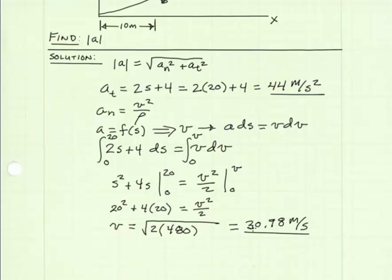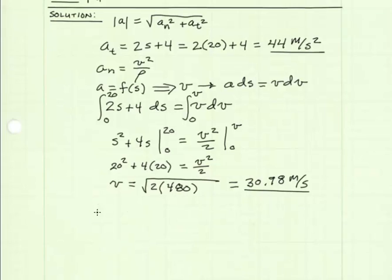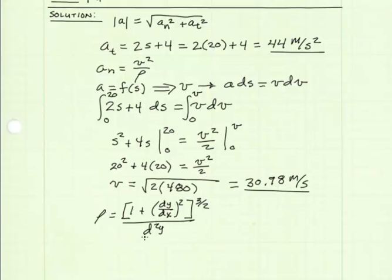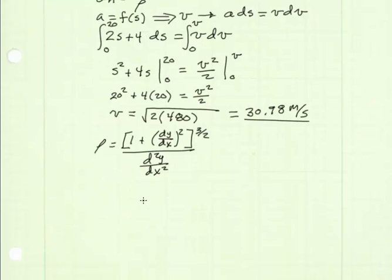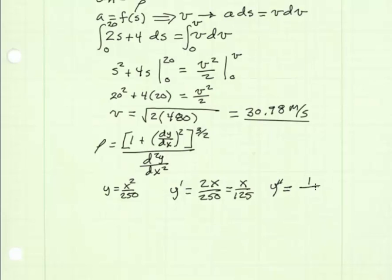Now we have our velocity. The next thing we need is our radius of curvature. Our radius of curvature rho is equal to 1 plus the derivative of y with respect to x squared, all to the 3 halves power, divided by the second derivative of y with respect to x. We need to find the derivatives of our function, which was x squared over 250. Our first derivative is 2x over 250, equal to x over 125. Our second derivative is equal to 1 over 125.